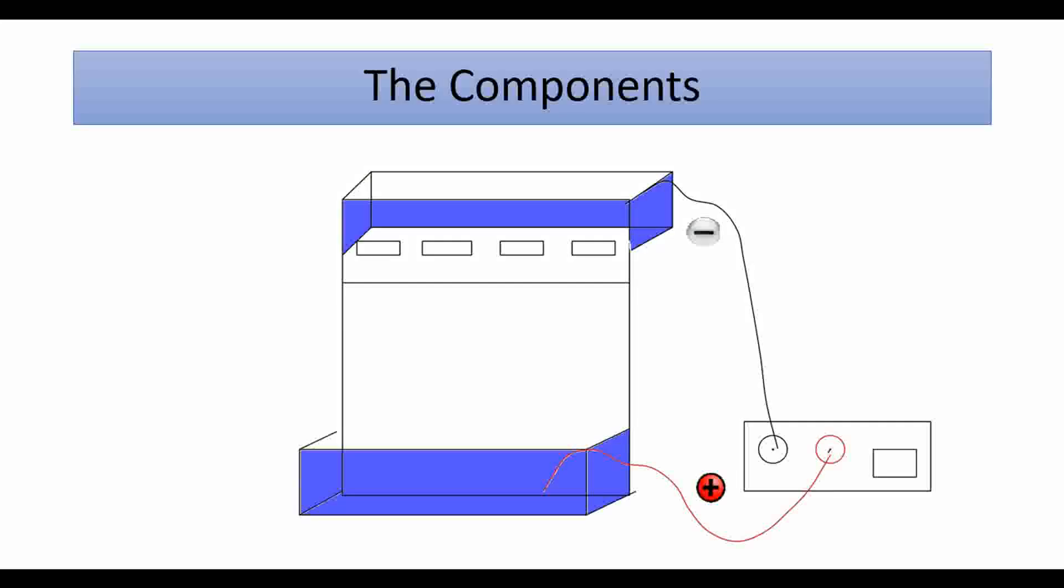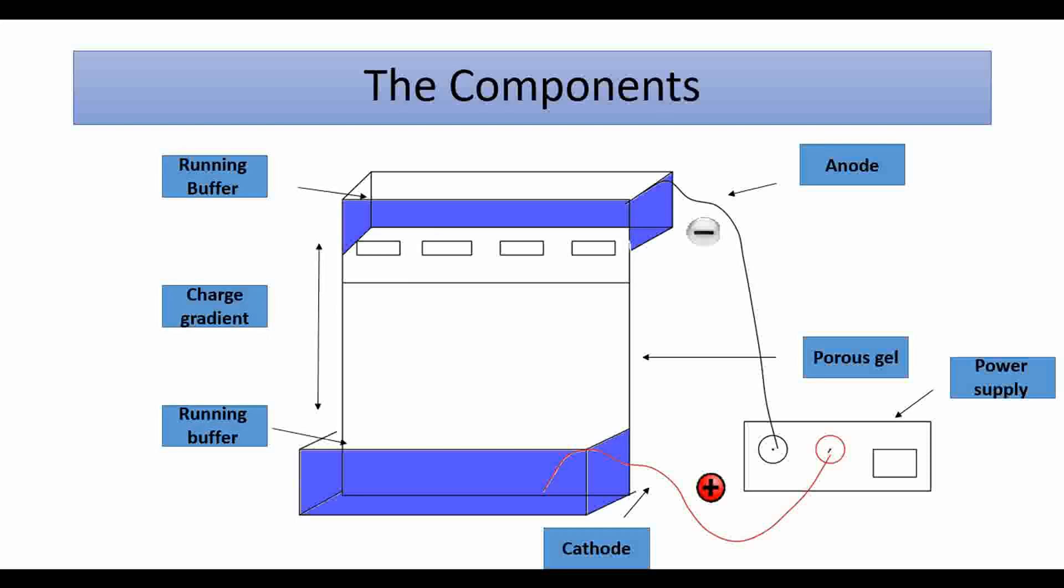The gel electrophoresis term describes the migration of charged molecules from the negative side to the positive side. We have a cathode at one end and anode at the other end, and in between we have a porous gel. We also use appropriate buffer to create a charge gradient upon the electric current. The sample is injected in this system to be migrated from negative side to the positive side.